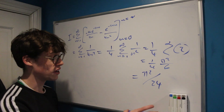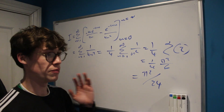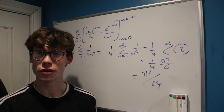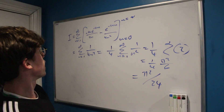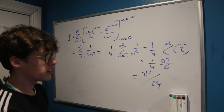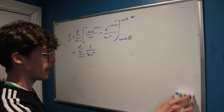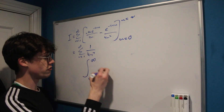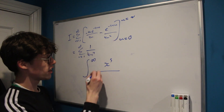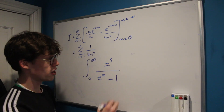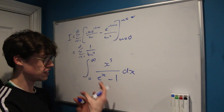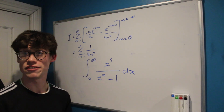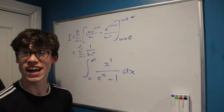I thought this was a great integral because of how all the manipulation of sums was hidden underneath what looked like it was going to involve a lot of trigonometry. As a challenge, have a look at creating a general formula for the integral from 0 to infinity of x^s / (e^x − 1) dx, which is quite similar to what we saw. Let me know in the comments what you get. Thanks for watching and see you soon!